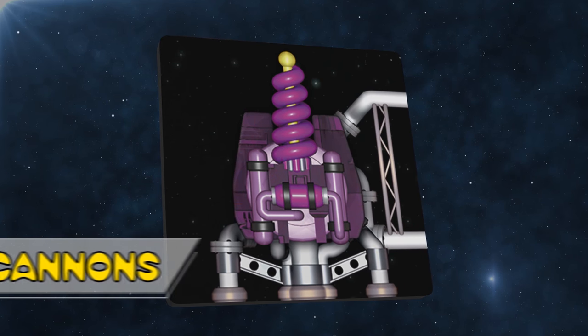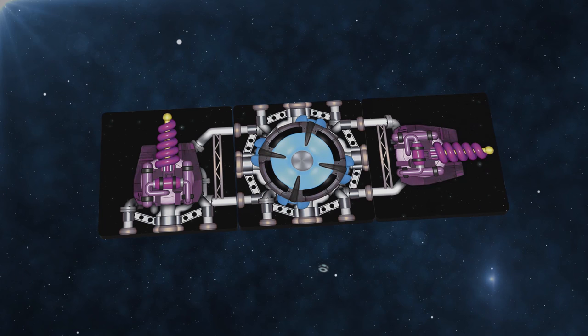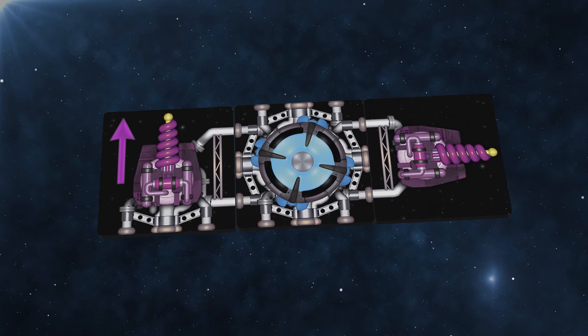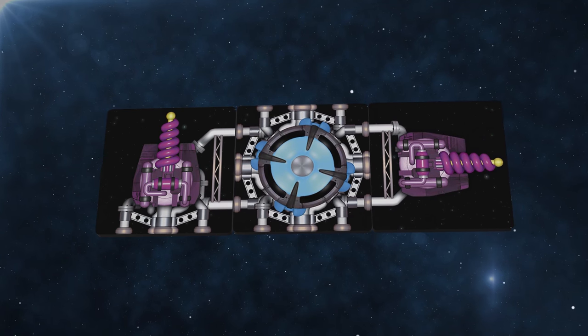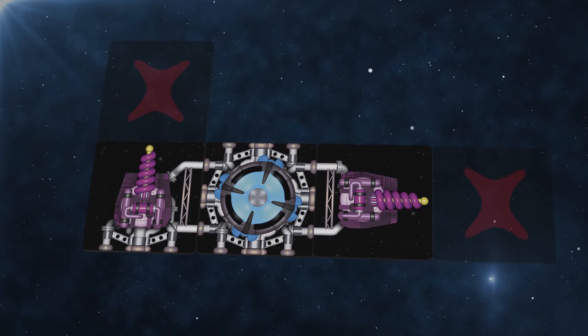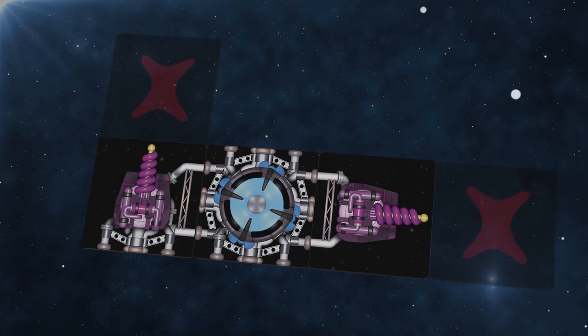Cannons help you fight off space pirates and shoot meteors. They can point in any direction, although they are most effective when pointing forward. The special building rule for cannons is that the space directly in front of the barrel must be empty. Since an adventure through space can be dangerous, you want to have as many cannons on your ship as possible.